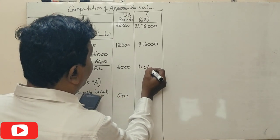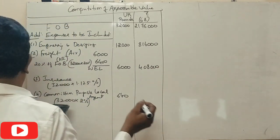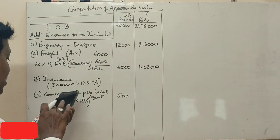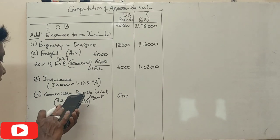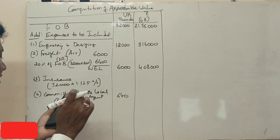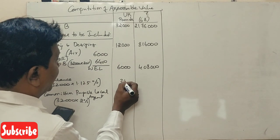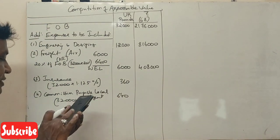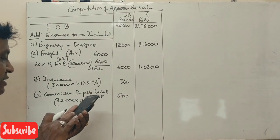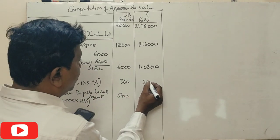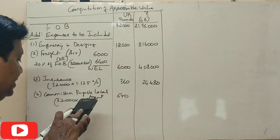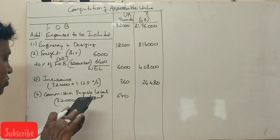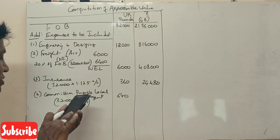Total 21,76,000. This is 32,000 into 1.125%, 360 pounds. 360 into 68, 24,480. 43,520.